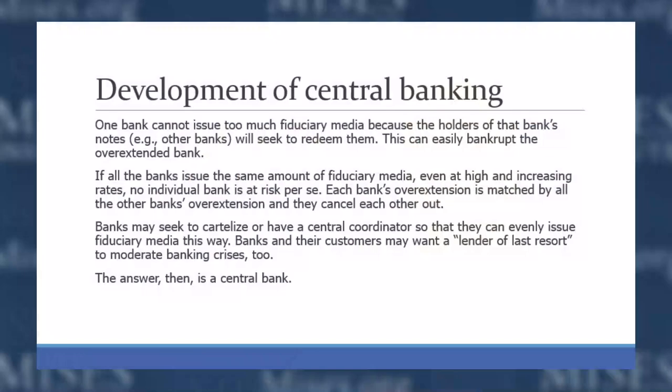So if banks realize this, they might seek to cartelize — group together to increase their fiduciary issue at the same rate. They can either do that as a cartel, but cartels are unstable. So a central coordinator attached to the government can ensure they increase their issues at the same rate. Banks and customers may also want a lender of last resort to moderate banking crises. A single bank customer wants more assurance — if there were a lender of last resort that could swoop in and save a failing bank, the customer would like that, or they could have deposit insurance. In our modern world, we have both: a central bank and federal deposit insurance.